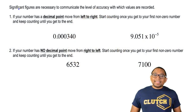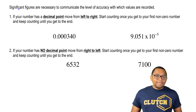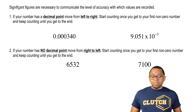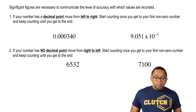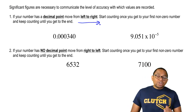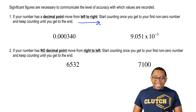In this video, we're going to take a look at the steps we need to do in order to figure out the number of significant figures in any value. It's all based on if you have a decimal point or not. If your number has a decimal point, move from left to right. Start counting once you get to your first non-zero number and keep counting until you get to the end.